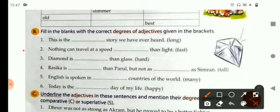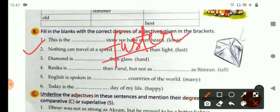Now, the next one is, nothing can travel at a speed blank than light. So, here you will write faster, that is a comparative degree.